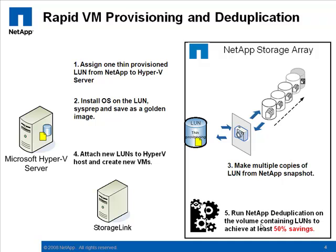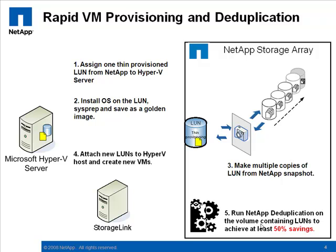Before we start the live demonstration, we want to provide you an overview of what you're going to see. We have a Windows 2008 server running Microsoft Hyper-V. We have another Windows 2008 server running Citrix Essentials with StorageLink. And we have a NetApp FAS 3170 storage array.